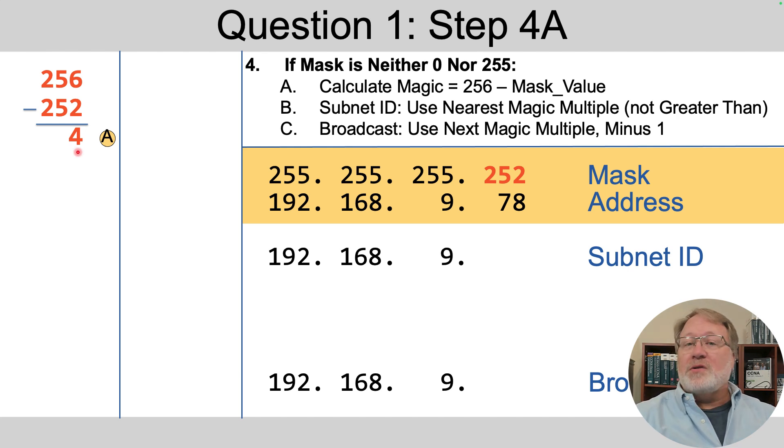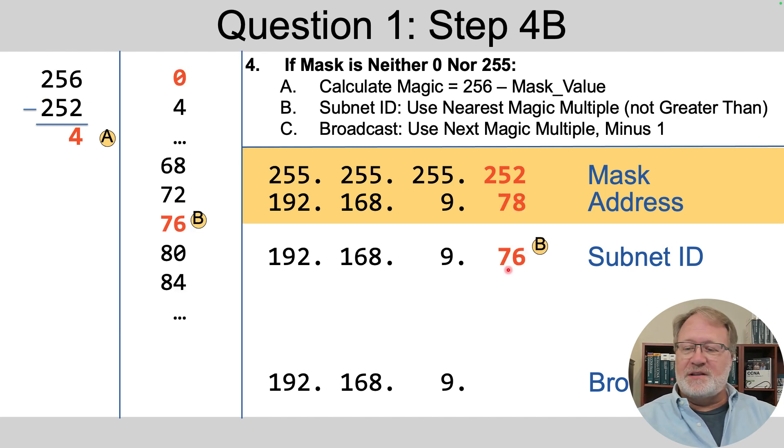What does that mean? The magic number, it's a multiple of that that's the subnet ID's value. So we just have to figure out which multiple, and that's what we do at step B. So writing down all the multiples of four, starting with zero, you always start with zero because the subnet ID might have a zero in that octet.